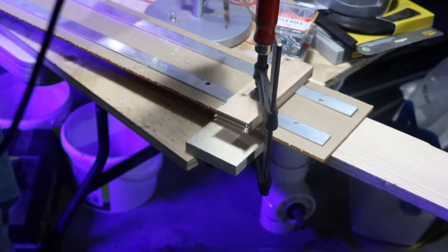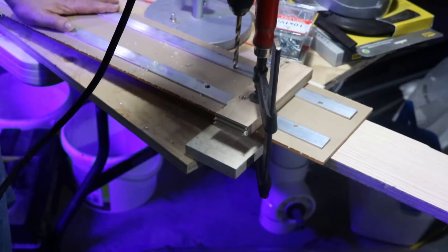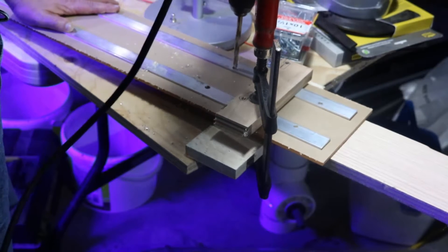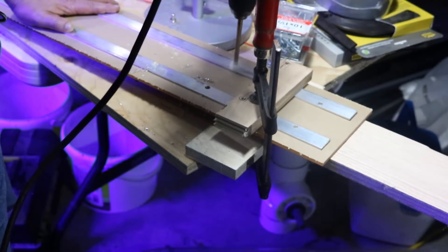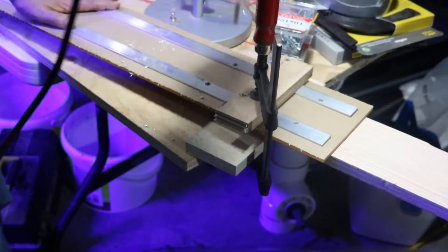So what I've done here is I clamped it all in place. These are all in position where they need to be and I've already pre-drilled the aluminum strips. So all I'm doing is drilling through everything all at once so all the holes match up.